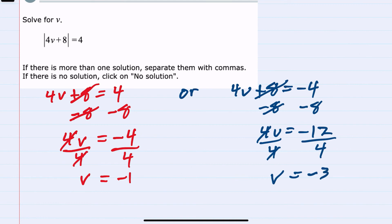So we have two solutions. We would separate them by a comma when entering them. And again, the reason we have two solutions is the absolute value, in this case 4v plus 8, could either be a positive 4 or a negative 4. Either way, taking the absolute value would give us that positive 4 that it's being set equal to.